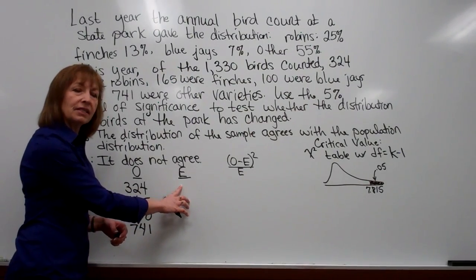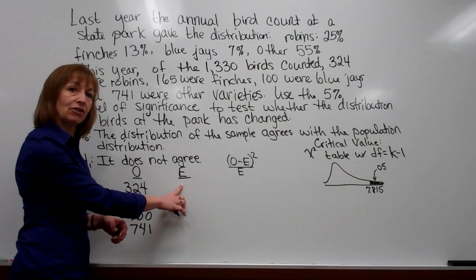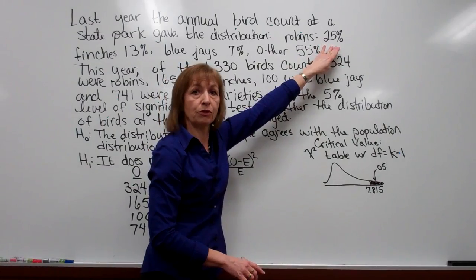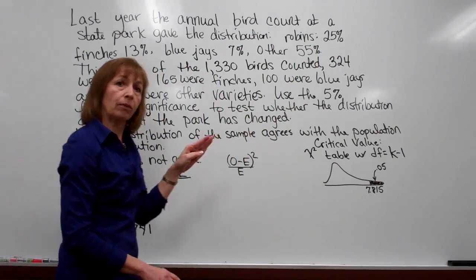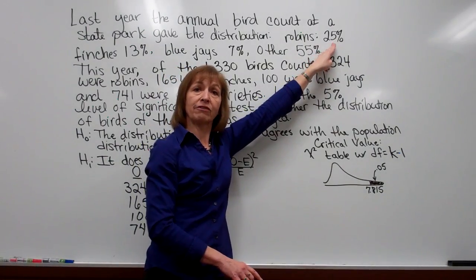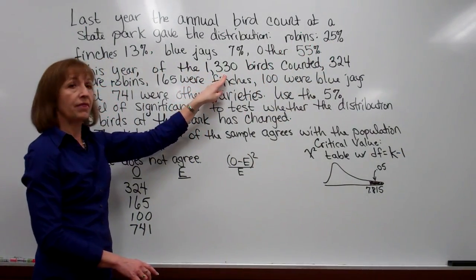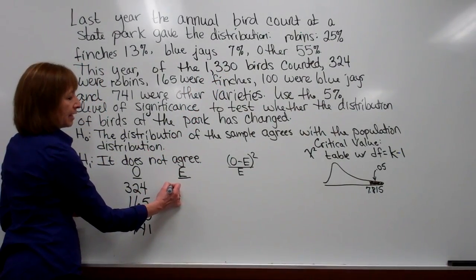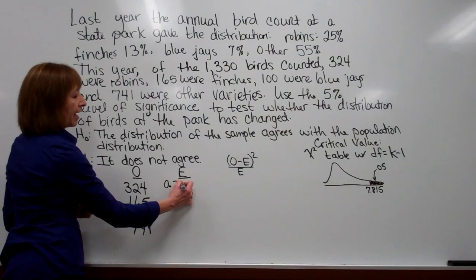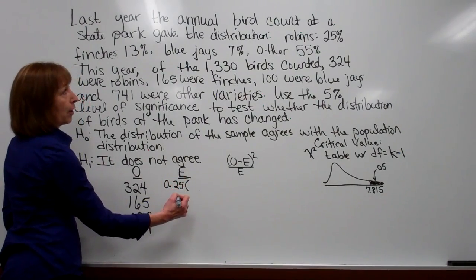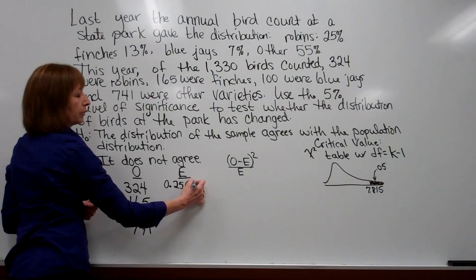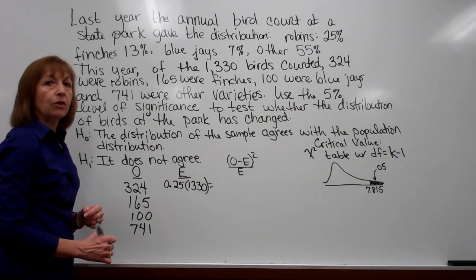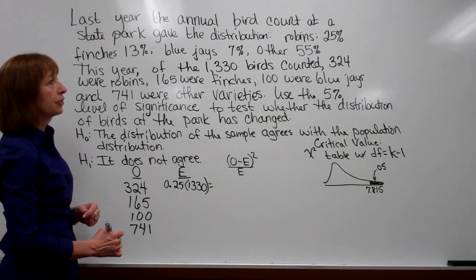Now expected. This is to say what would you have expected to see for each of these categories if it does meet that original distribution. Well, if I had 25% were robins, then I would have expected about 25% of the 1330 birds that I saw to be robins. So for the expected I'm going to take my percentage, 0.25 in decimal form, and multiply it times the total number of birds that were observed. And when we do that multiplication we get 332.5.